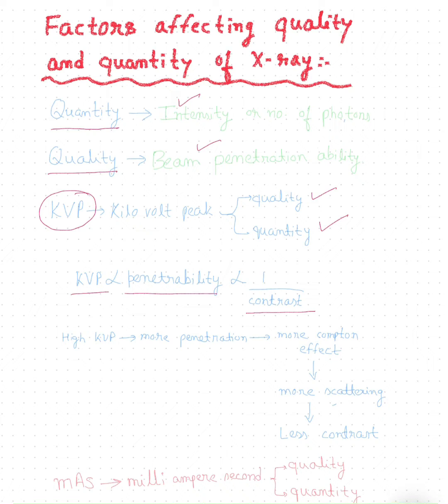Let's understand this concept. When we increase the KVP, it leads to more penetration of the patient by the X-ray beam. More penetration causes more Compton effect, which leads to more scattering of the X-ray beam. Finally, these scattered X-ray beams lead to reduced contrast of the final image.